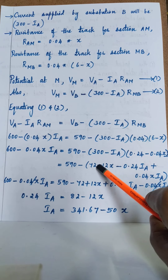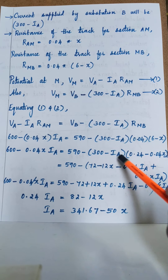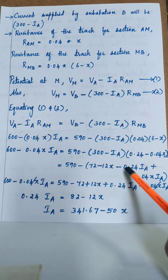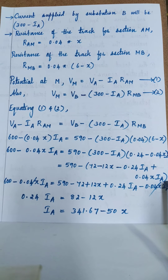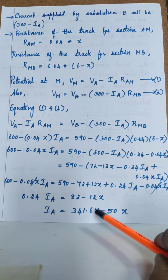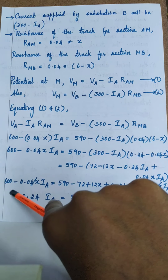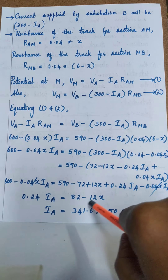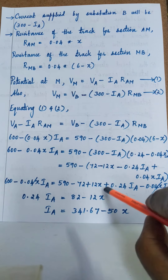Expanding: 300 times 0.24 = 72, minus 300 times 0.04x = 12x, minus 0.24Ia plus 0.04x·Ia. The 0.04x·Ia terms cancel from both sides. Simplifying: 0.24·Ia equals 600 minus 590 plus 72 minus 12x, which gives 0.24·Ia = 82 minus 12x. Therefore, Ia = 341.67 minus 50x.